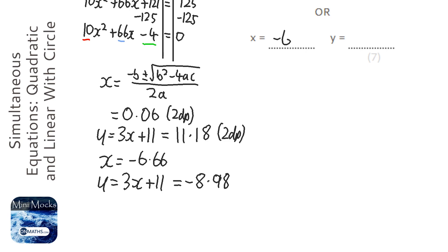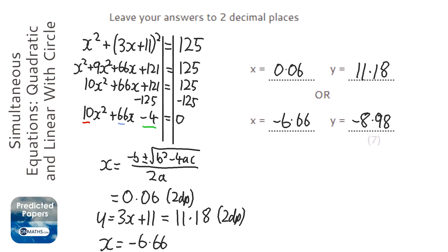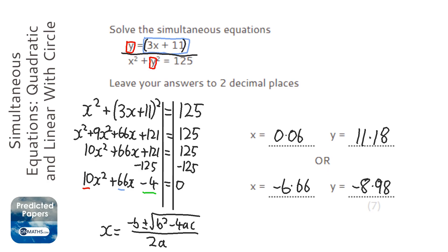So my other two solutions are minus 6.66 and minus 8.98. And you could try and write down some estimated values for the marker in case you've made a mistake on the calculator. Try and write down as much as you can write down so you get marks even if you've got the wrong answer.